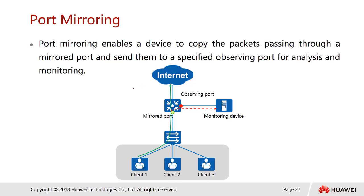Port mirroring enables the device to copy packets passing through a mirrored port — the source port — and send them to a specific observing port for analysis and monitoring. The observing port is connected to a laptop or computer running Wireshark. Wireshark supports Windows, macOS, and Linux. The mirroring function constantly sends packets to the monitoring device.